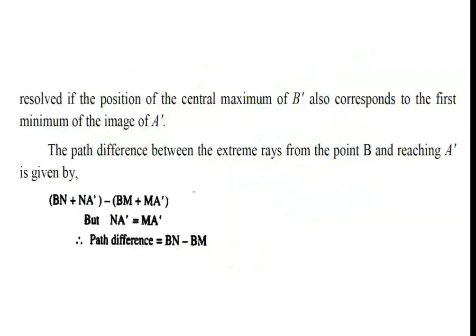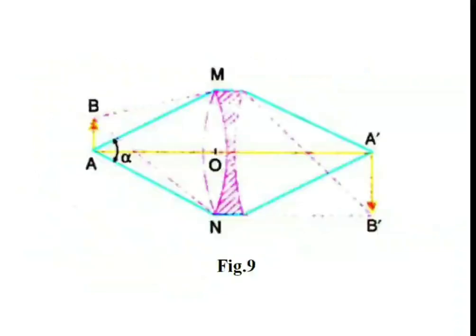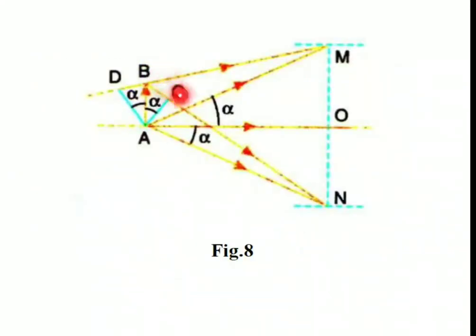BN and BM are written as BC plus CN, and BM as DM minus DB. Here, CN, AN, AM, and DM — their lengths are the same. So by simple calculation, CN is cancelled with DM, and minus into minus gives plus. So there are only two remaining values: BC plus DB.